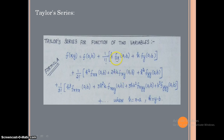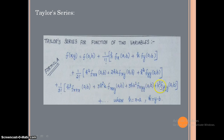The first-degree term is linear. Then squaring gives the second degree using the (a+b)² formula: a² + 2ab + b², corresponding to f_xx, f_xy, f_yy. So h² means f_xx, hk means f_xy, and k² means f_yy.